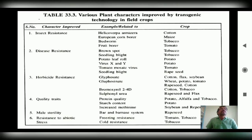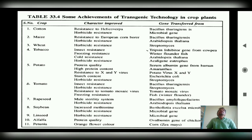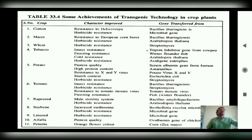In crops like potato and tobacco, you can increase the protein content and starch content. Some crops like tomato and tobacco also show resistance to abiotic stresses. Another chart shows achievements in transgenic technology, particularly in cotton, maize, wheat, tobacco, potato, tomato, soybeans, rapeseeds, linseeds, alfalfa, and petunia, which show improvement over normal plants through transferred genes from various organisms.